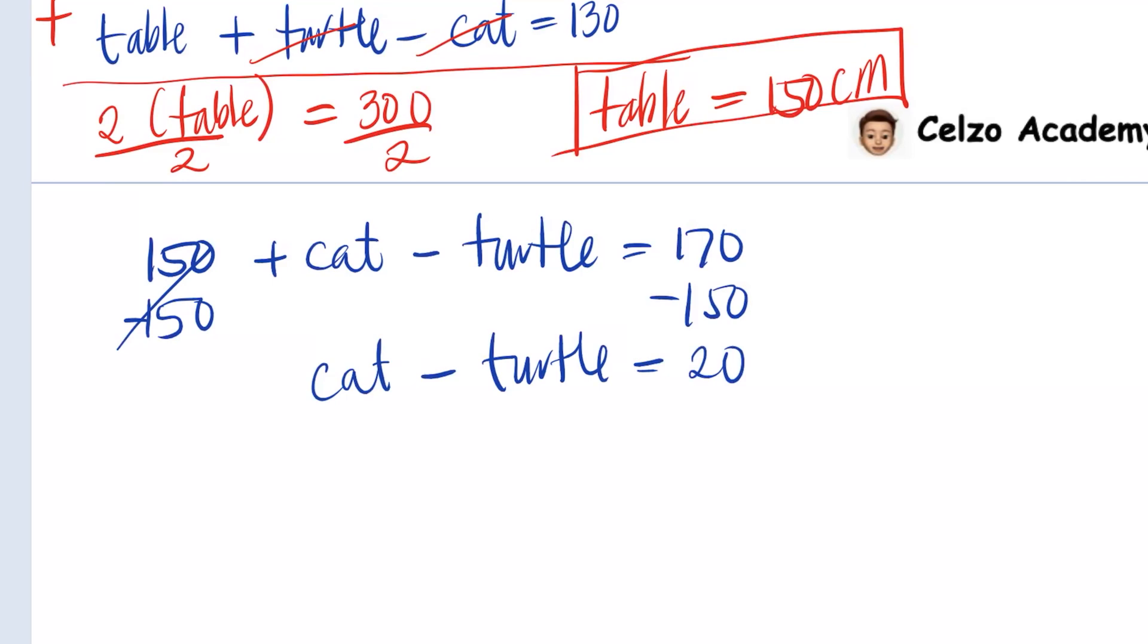Substituting 150 to the second equation, we have 150 plus the height of the turtle minus cat is equal to 130.